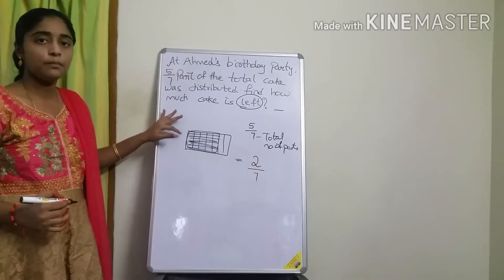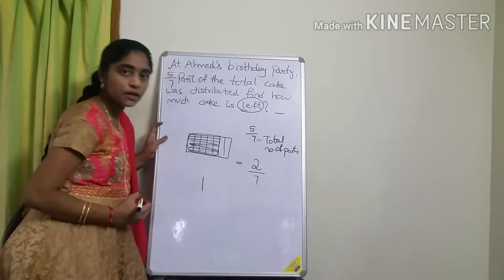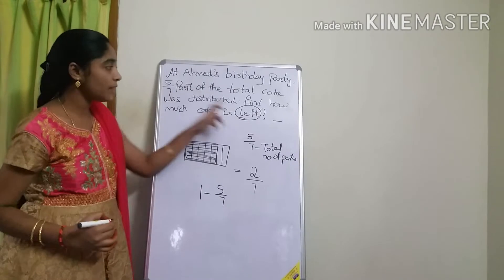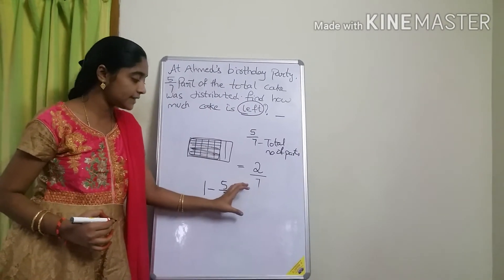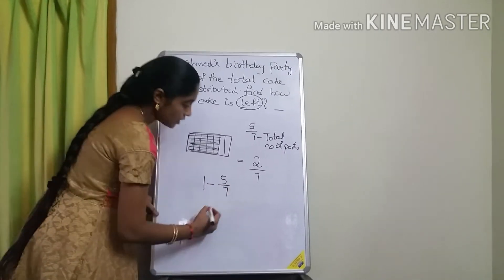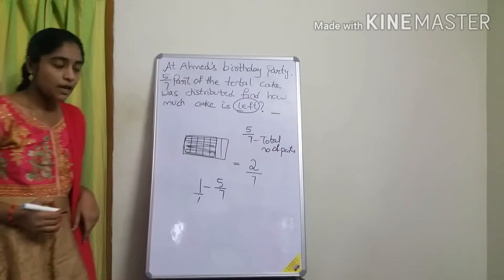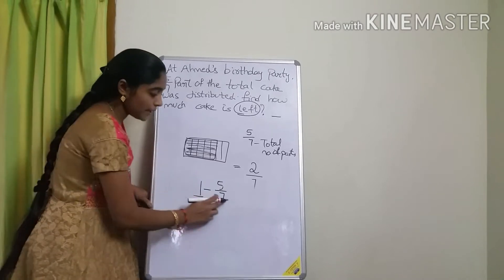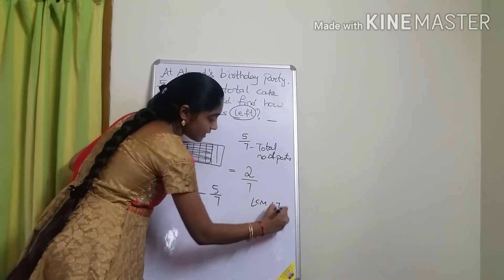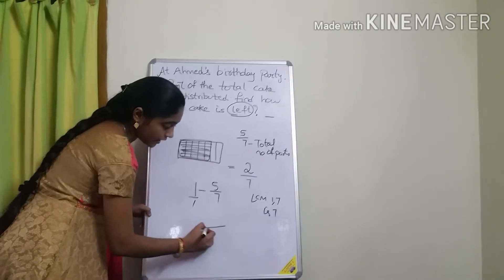This was pictorially shown, but how do we solve the problem? Total cake means 1. From that, you already distributed 5/7. How much is left? That means: 1 minus 5/7. Since 1 has no denominator written, we treat it as 1/1. So we need to find the LCM of 1 and 7, which is 7. Make the denominator 7.